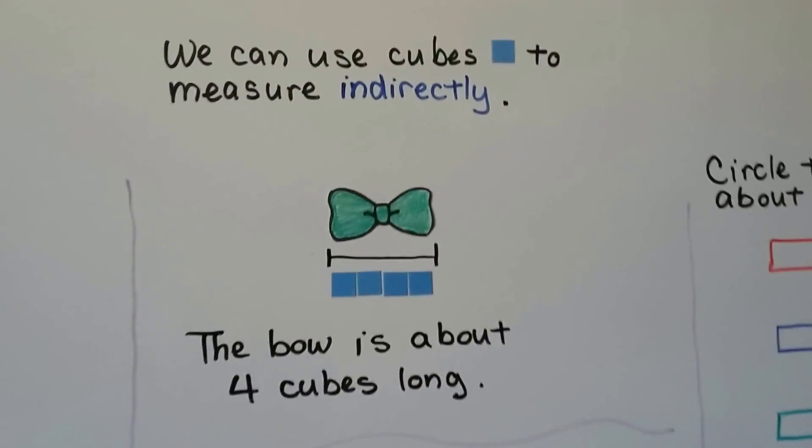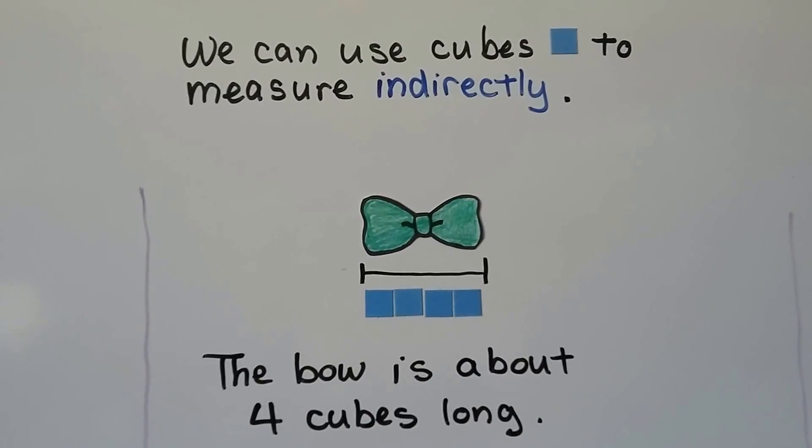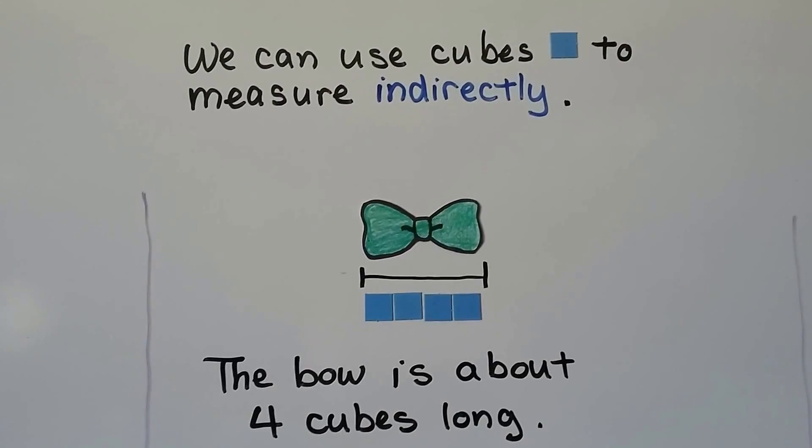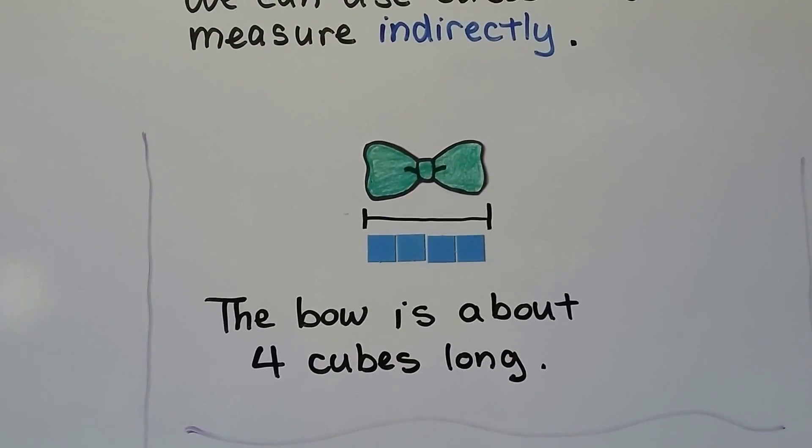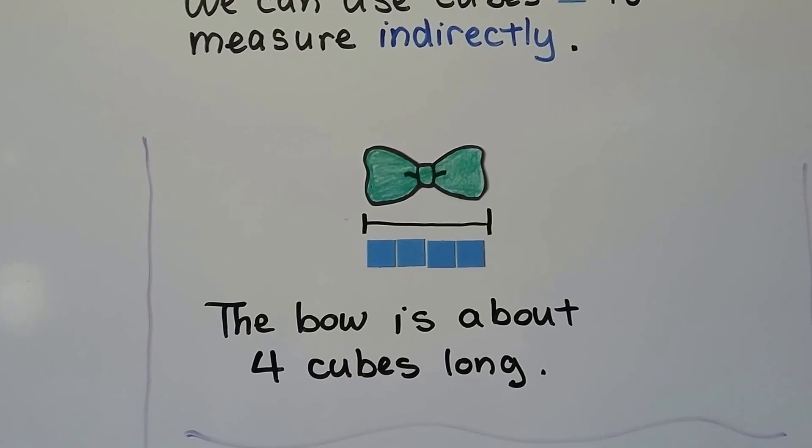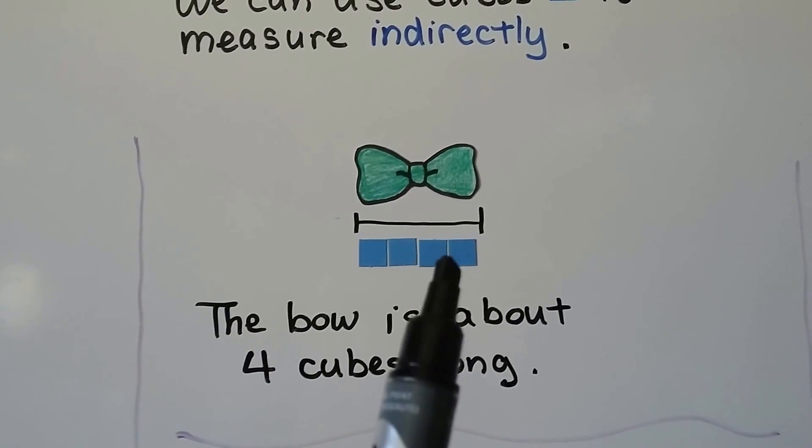So we can use cubes to measure indirectly. The cube would be our non-standard unit of measure. The bow is about four cubes long. One, two, three, four.